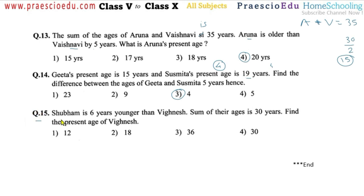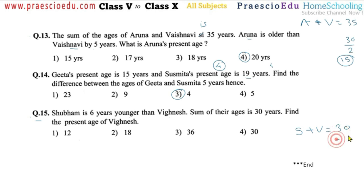Question number fifteen: Shubham is six years younger than Vignesh, and the sum of their ages is 30 years. Let S for Shubham and V for Vignesh: S plus V equals 30, and the difference is 6. First subtract 6 from 30, giving 24. Divide by 2, so Shubham's age is 12. Then 12 plus 6 equals 18 — Vignesh's age. The question asks for Vignesh's present age, which is 18. Option number two is correct. Thank you.